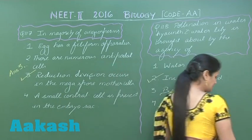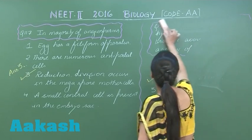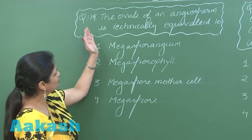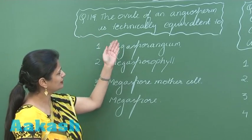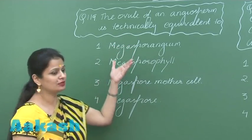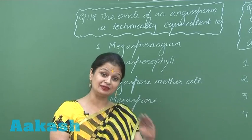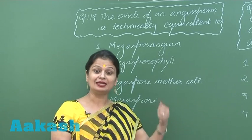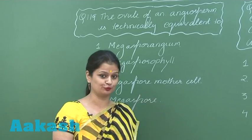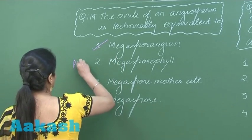In question number 119, the ovule of an angiosperm is technically equivalent to a megasporangium, or more precisely, an integumented megasporangium. The carpel is equivalent to a megasporophyll. So the right option for this question is option number one.